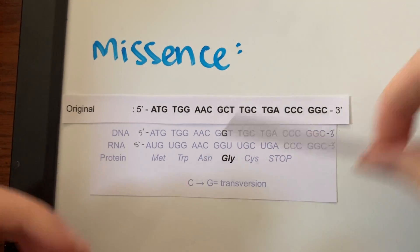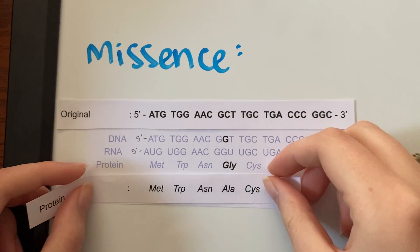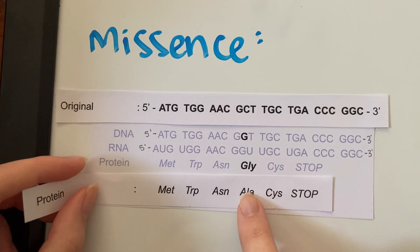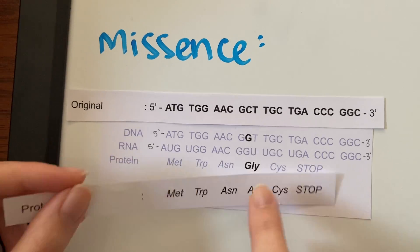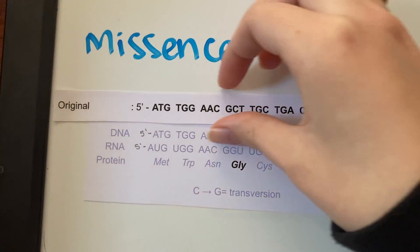In our original sequence we had a different protein, and you can see that comparison here. So a missense mutation will just change the amino acid.